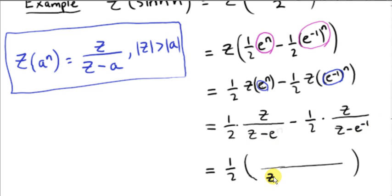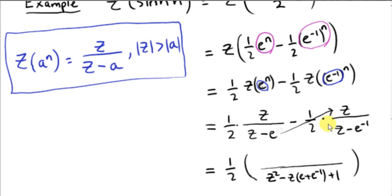We're going to get minus Z·e to the minus 1 minus Z times e. If we take out the minus Z, we get e plus e to the minus 1. Then we have minus e times minus e to the minus 1, which is plus 1. To get the numerator, we multiply Z minus e by Z, and Z minus e to the minus 1 by Z. We have Z minus e times Z, which is Z squared minus eZ.